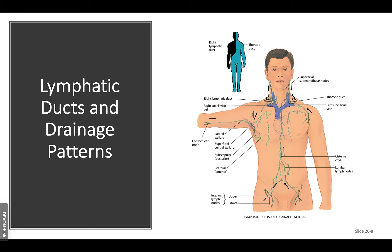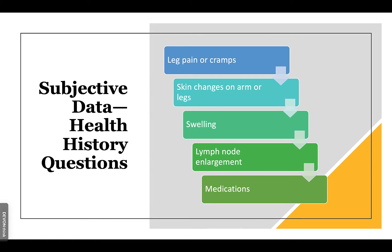Subjective data for the health history: we want to find out if the patient has any leg pain or cramps. Some patients mistake cramping for claudication. Claudication is the first sign that the leg is getting too little blood flow — a supply and demand problem. Patients will notice pain when they walk around, but if they rest or get off their legs, they feel better. Over time, they decrease their activity because they know walking that far will cause pain.